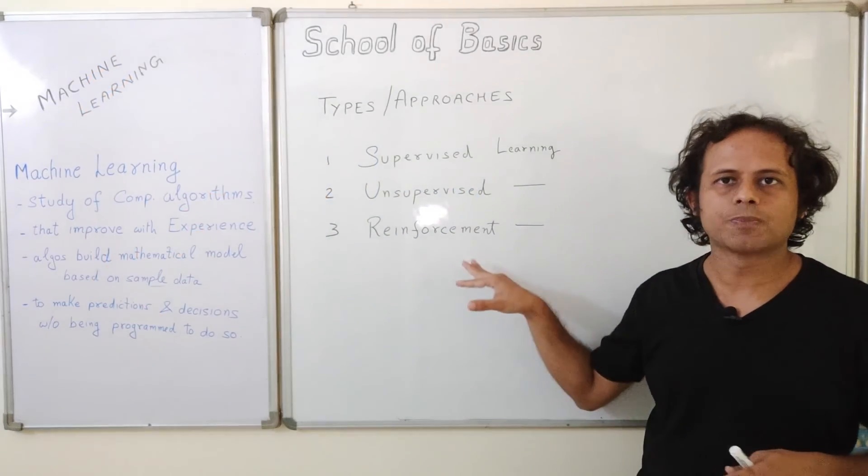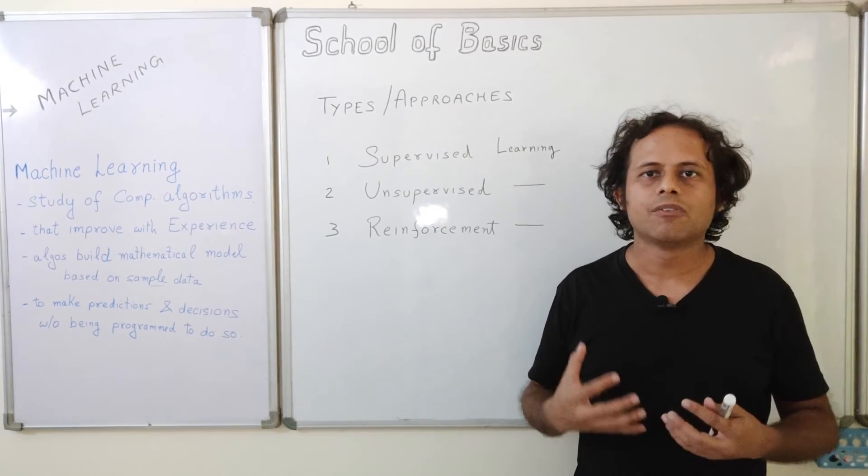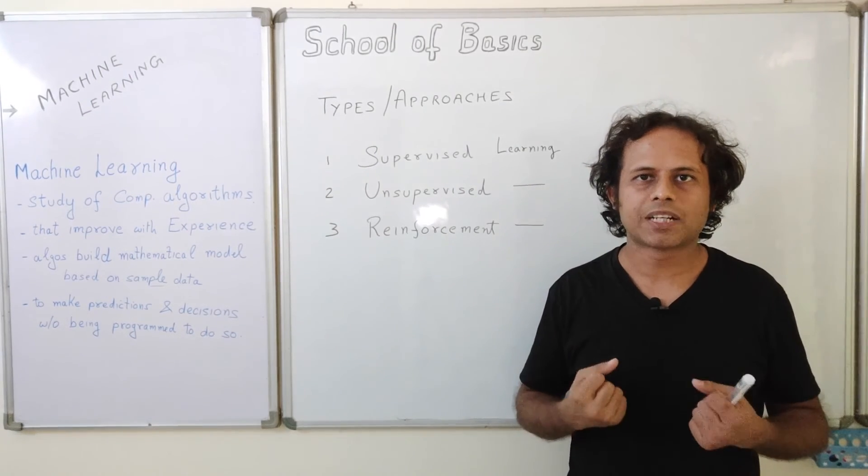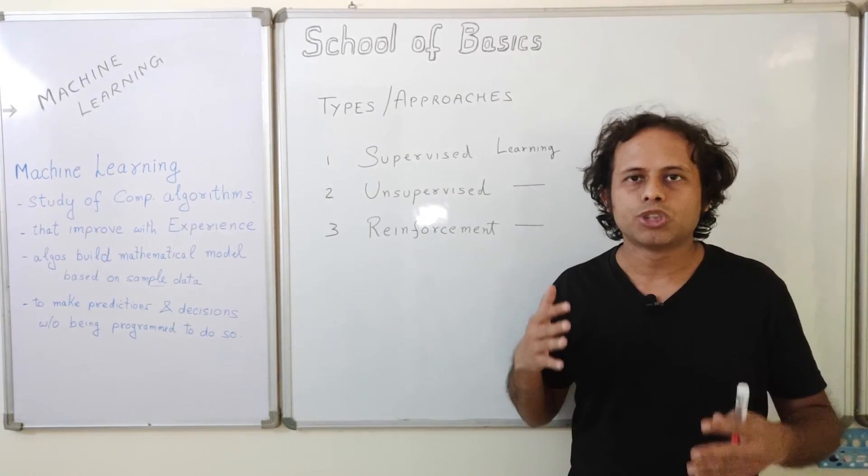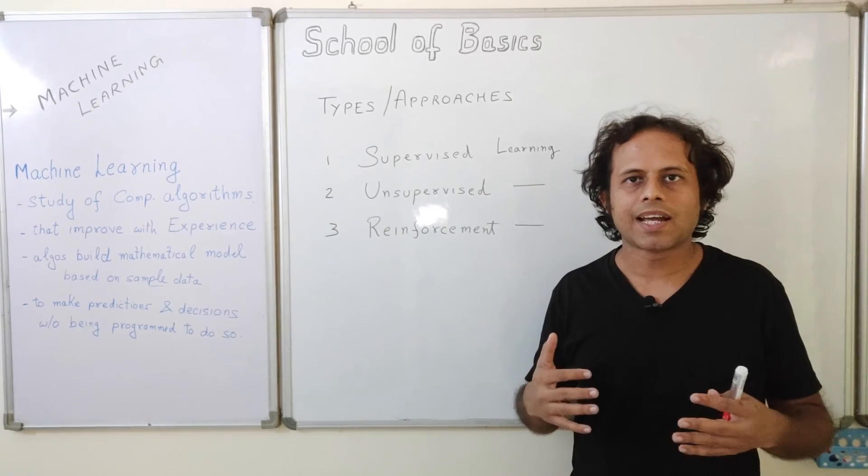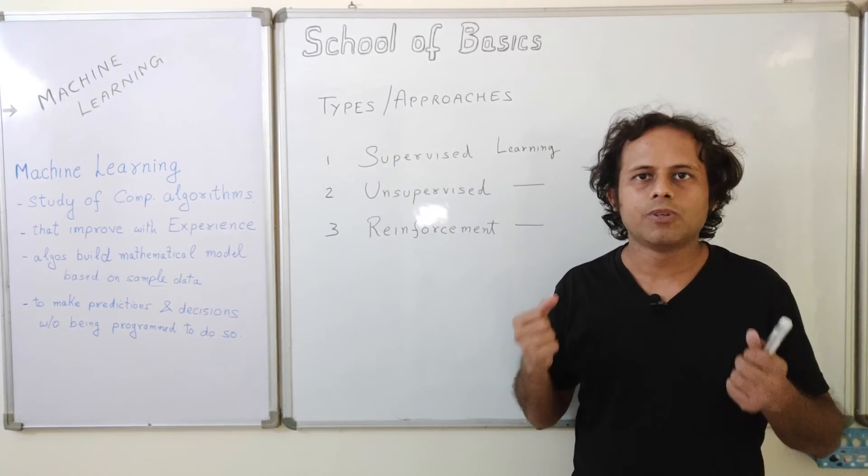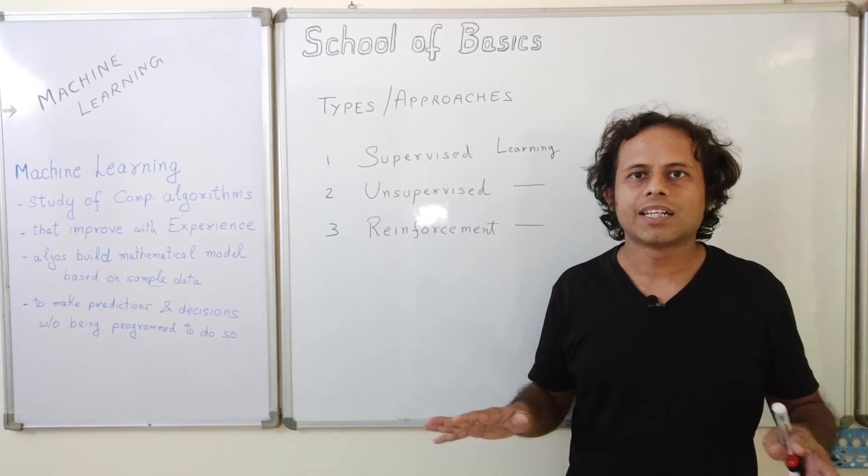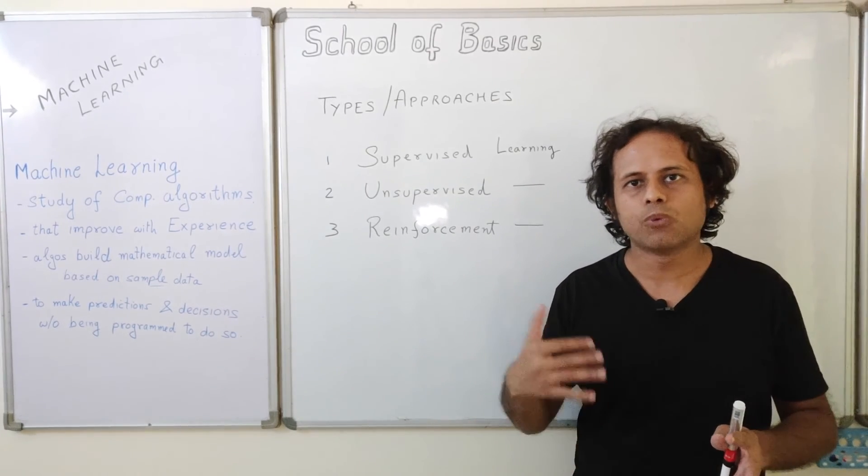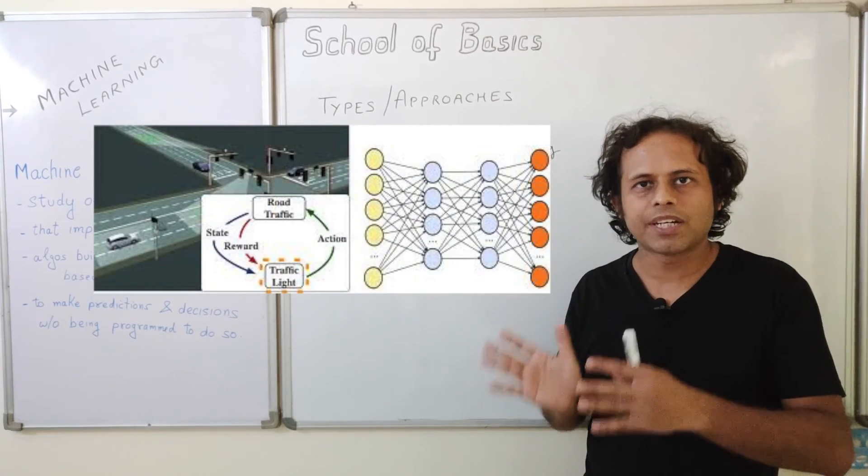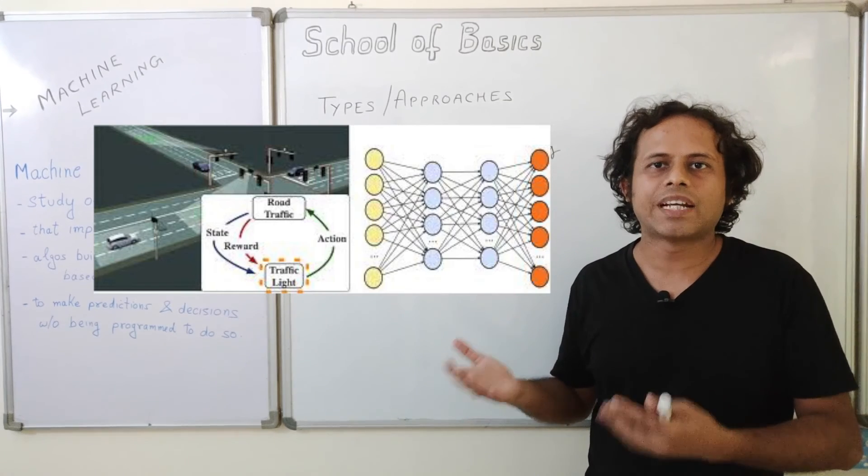Then we have reinforcement learning. This is when a machine or a computer has to work in a dynamic environment, we make use of reinforcement learning. For example, automated traffic lights. Now in case the traffic lights are automated to change the signal or change the lights after a set duration, that is actually not machine learning. But if we have traffic lights which can check the conditions or the dynamic environment and see which lane has more traffic and it provides more green signal to that lane and sees and predicts which lane has less traffic and can predict and then take a decision to provide more red signal to that lane.